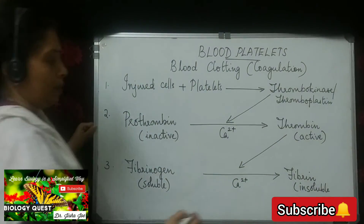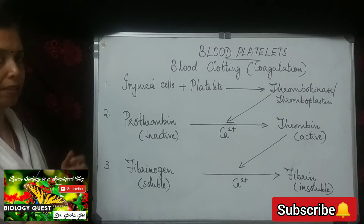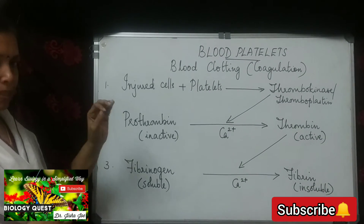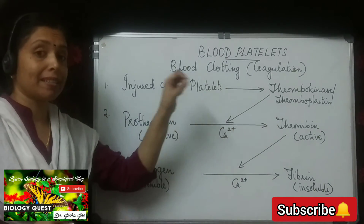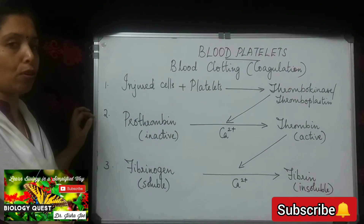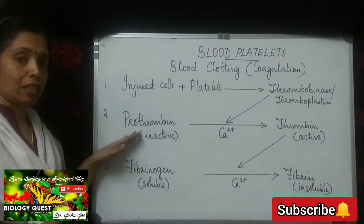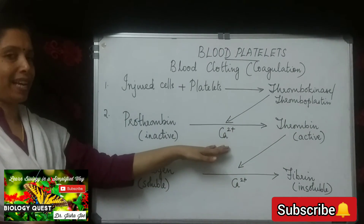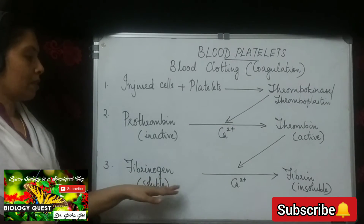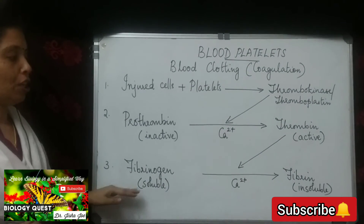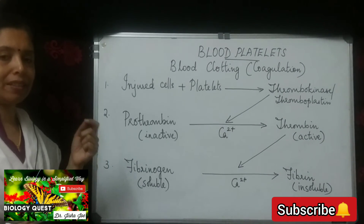Soluble fibrinogen is converted into insoluble fibrin. Since fibrin is insoluble, it forms a network of threads at the region of the wound. To recap all three steps: platelets disintegrate and release thrombokinase or thromboplastin; thromboplastin acts as an enzyme and converts inactive prothrombin to active thrombin in the presence of calcium ions; thrombin acts as an enzyme in the presence of calcium ions to convert soluble fibrinogen to insoluble fibrin, which forms a network of threads at the wound.